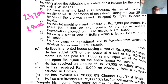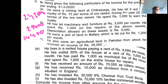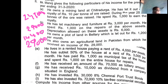He owns a plot of land at Ballari which is let out for rupees 1,200 per month. This is a direct one — annual rent is 14,400. He also owns agricultural land in Pakistan for which he received income of 29,000. Since the agricultural land is situated outside India, it is taxable. So 29,000 is the taxable income.